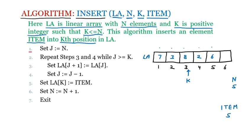We start the algorithm at line number one: set j equal to n. We assign j to point to n, and since the number of elements is five, j is now pointing to position five.